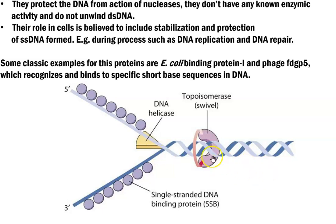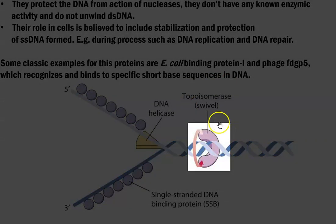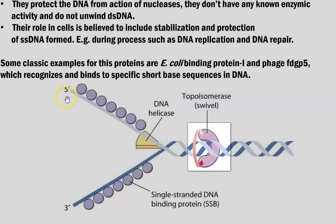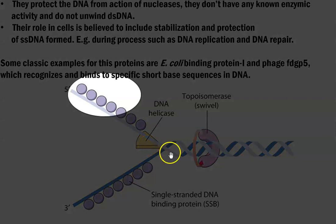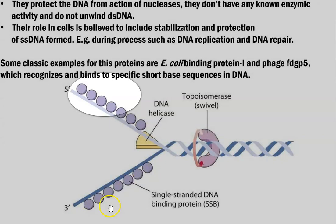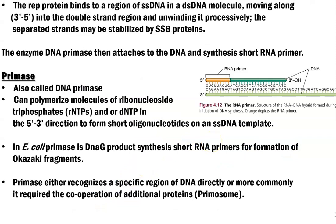The supercoils are removed by topoisomerase. Whatever single strands are formed due to helicase activity are stabilized by attachment of the single strand binding protein. After helicase activity and the formation and protection of single stranded DNA by the single strand binding protein, the next important enzyme that plays a major role in DNA replication is primase, also referred to as DNA primase.